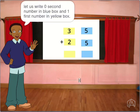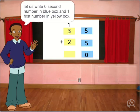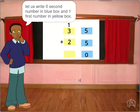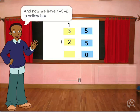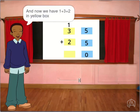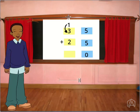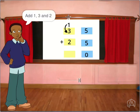Let us write 0, the second number in blue box, and 1, the first number in yellow box. And now we have 1 plus 3 plus 2 in yellow box. Add 1, 3 and 2.